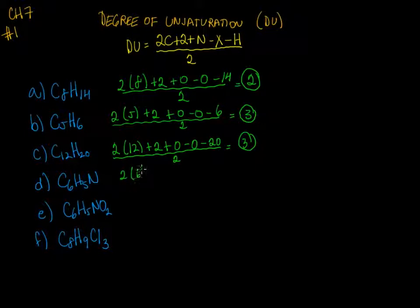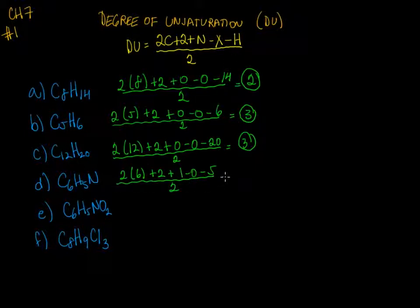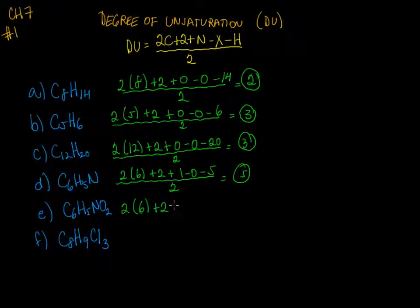For this next problem, I have six carbons, we add two from the formula, one nitrogen, zero halogens, and five hydrogens. Divide by two and I get a whole number of five.